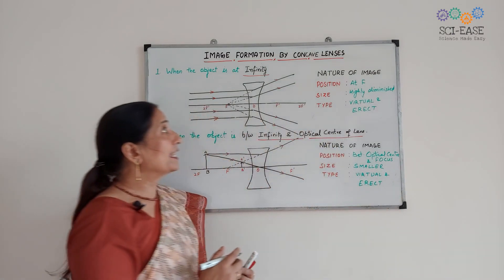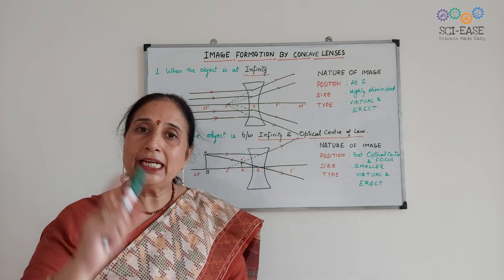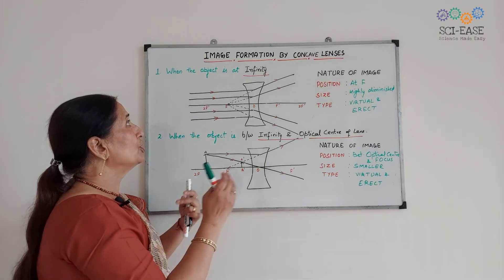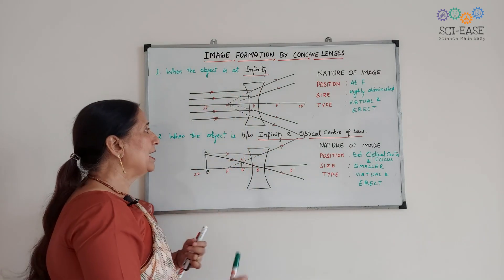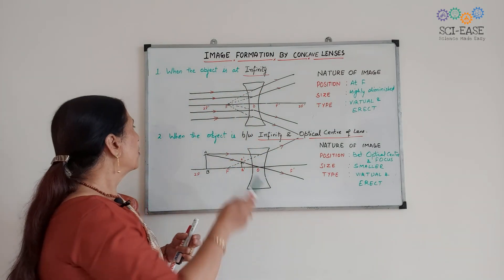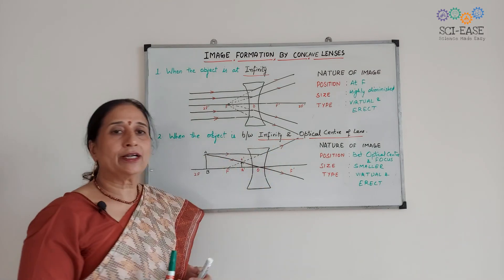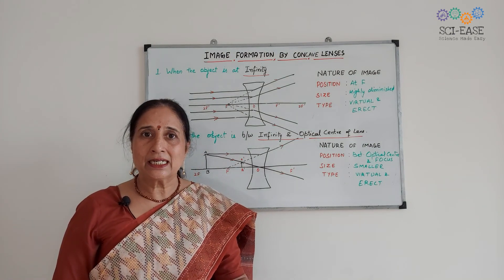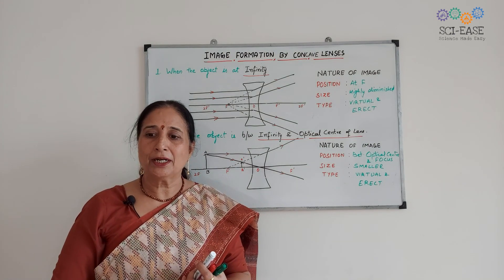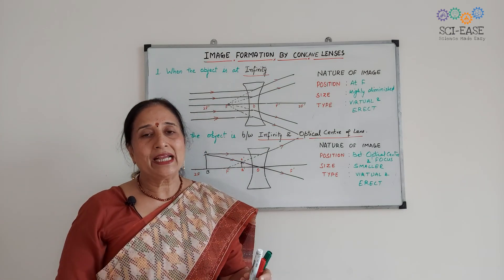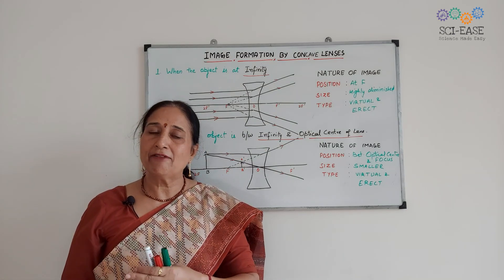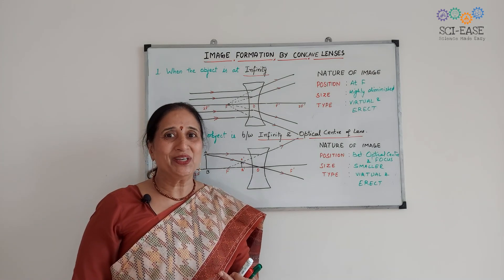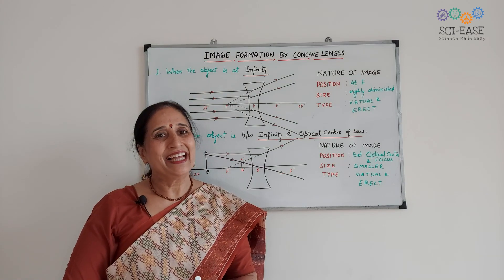So in case of the concave lens, only two ray diagrams are there. One is when the object is at infinity, and the second is when the object is between infinity and the optical center. We have completed the image formation by both convex and concave lenses. I will come with another topic in my next video. Till then, thank you very much.